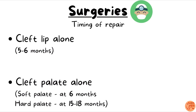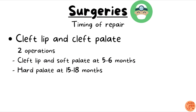Regarding timing of surgical repair: if the child has cleft lip alone, surgery is at five to six months of age. For cleft palate alone — if it is a soft palate defect, surgery is at six months; if it is a hard palate defect, surgery is at 15 to 18 months. If both soft and hard palate are involved, two-stage surgery is done: soft palate corrected at six months and hard palate at 15 to 18 months. If the child has co-existent cleft lip and cleft palate, the cleft lip and soft palate are corrected at five to six months, then the hard palate at 15 to 18 months.